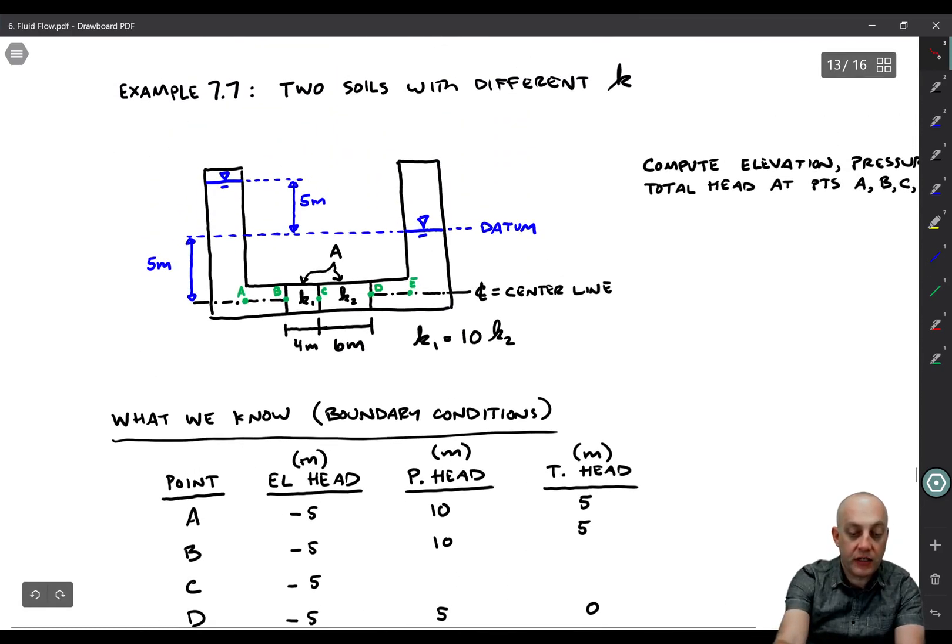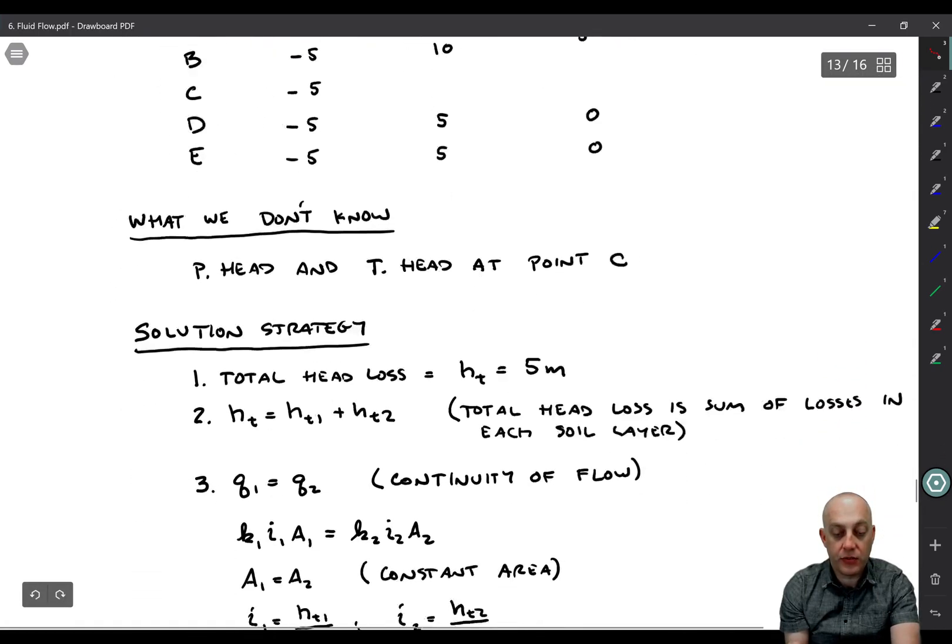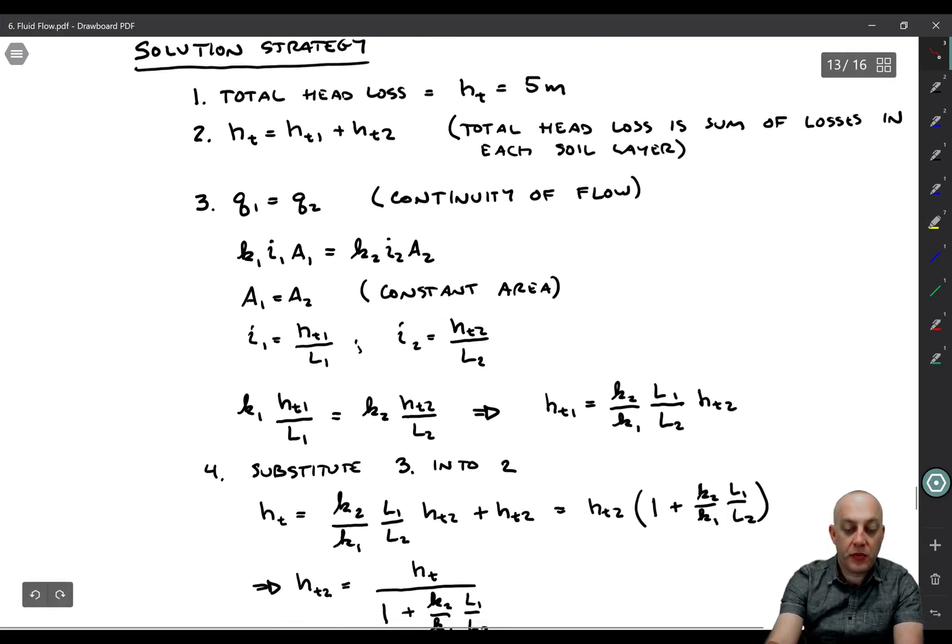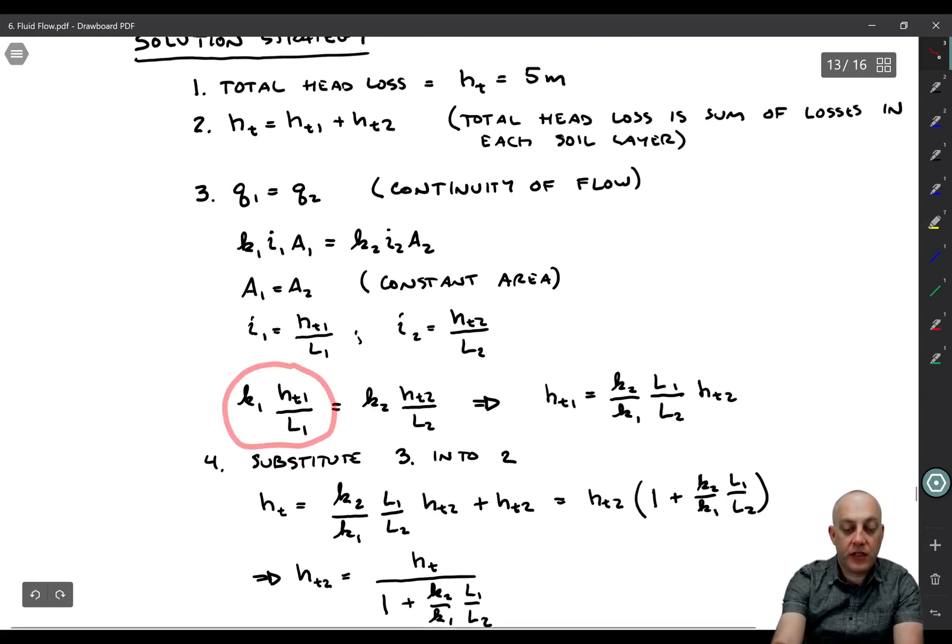The hydraulic gradient within layer one is equal to the total head loss in layer one divided by the length of layer one. Similarly, I2 is equal to HL2 over L2. So we end up with K1, HL1 over L1 equals K2, HL2 over L2. And if we solve for HL1, we get this equation. HL1 is proportional to HL2, and the constant of proportionality is K2 over K1 times L1 over L2.